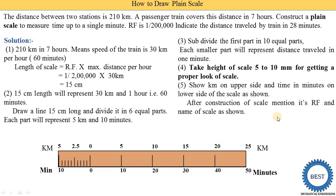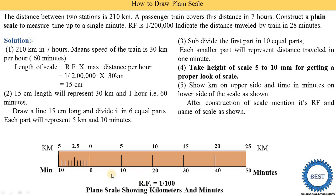After construction of the scale, mention its RF and the name of the scale as shown. The RF is 1 divided by 2 lakh. Note: by mistake, 1 by 100 is written in the drawing — correct it to 2 lakh. This scale indicates kilometers and minutes.